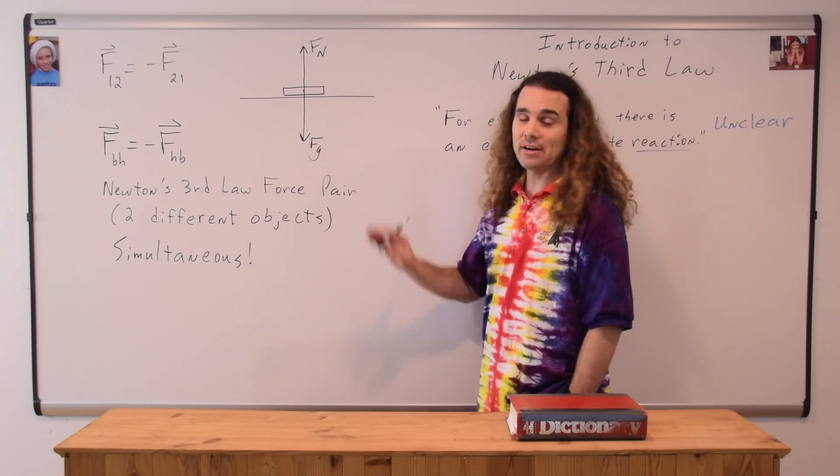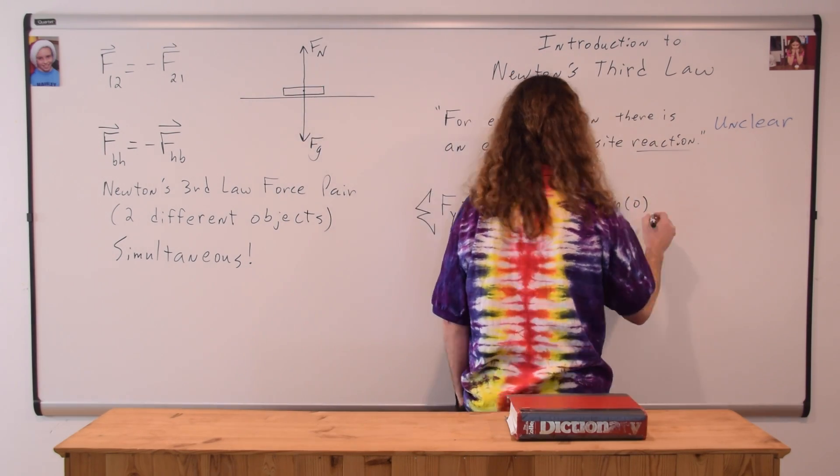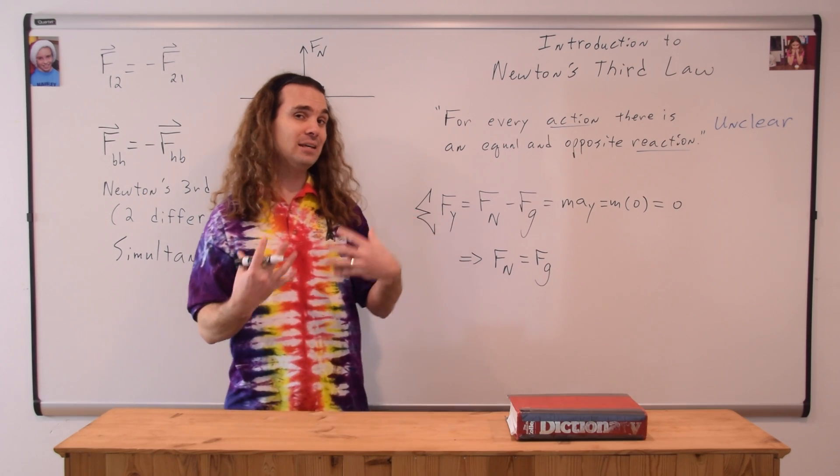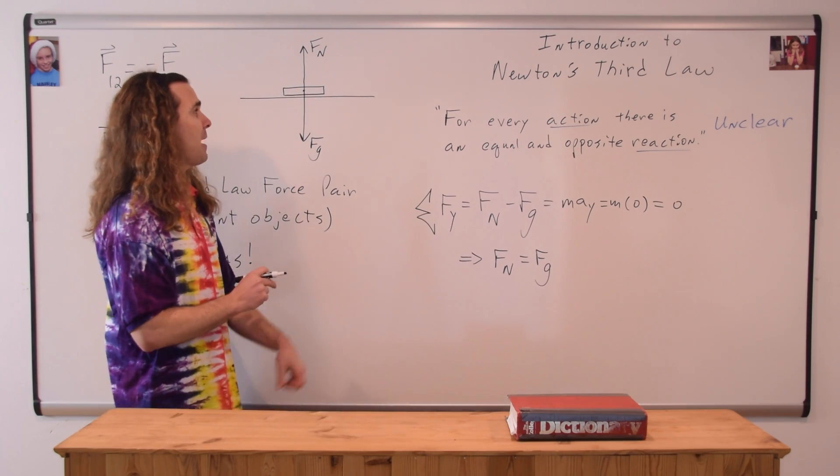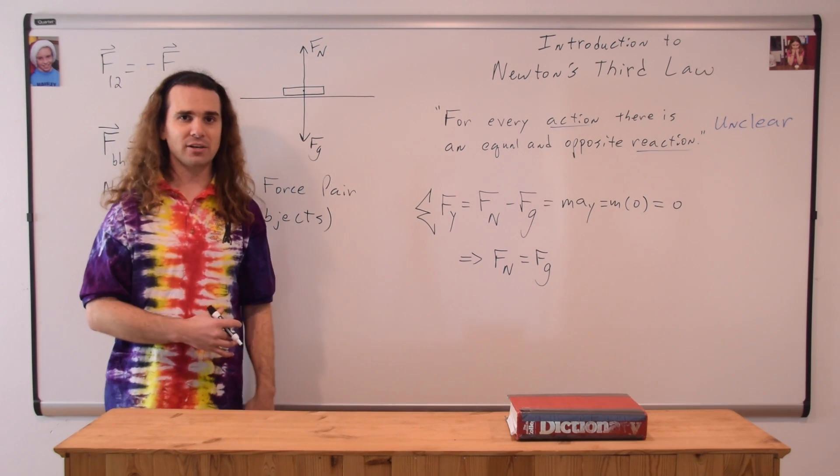Correct, and when we sum the forces in the y direction on the book, which we've done many times, we can show that the force normal and the force of gravity are equal in magnitude, and from our free body diagram, you can see that the force normal and the force of gravity are opposite in direction.